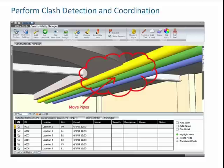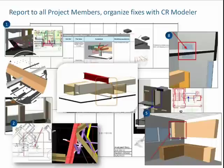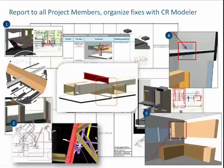This is a sample of how we identify those issues. In this case, if it were just a constructability analysis, we would say here's what we found, this is where we found it, this is the problem that we see, and this is who should look into this and try to take care of it. We always, in our process, show the 2D drawings as well.